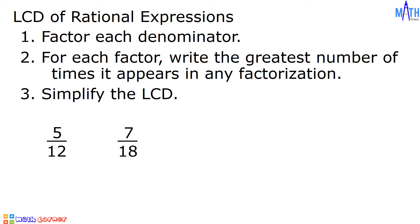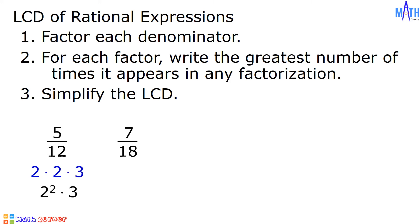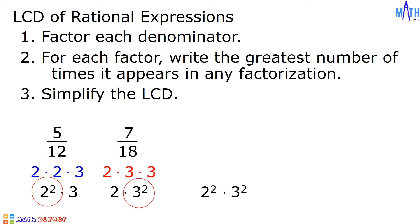Next example: 5 over 12 and 7 over 18. The denominators are 12 and 18. Let us factor each denominator. 12 is equal to 2 squared times 3. While 18 is equal to 2 times 3 squared. For each factor, let us write the greatest number of times it appears in any factorization. The greatest number of times 2 appears is twice, and the greatest number of times 3 appears is also twice. Simplifying: 2 squared times 3 squared is equal to 36, and 36 is the LCD.